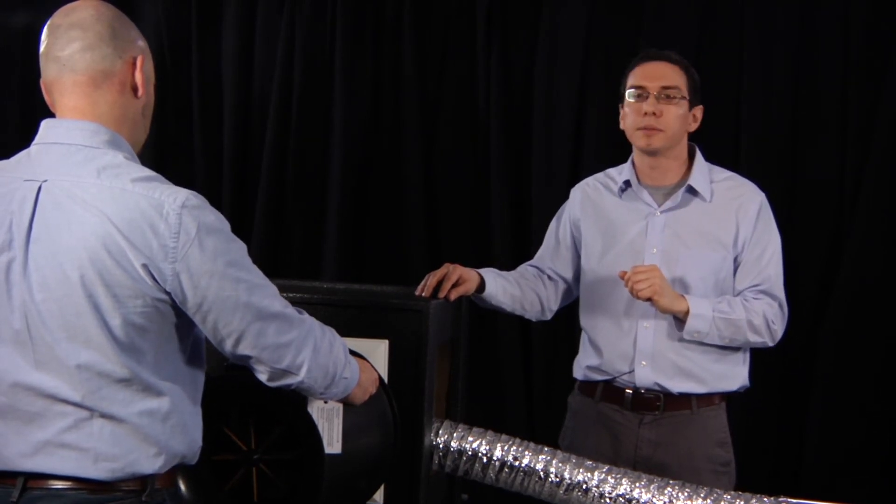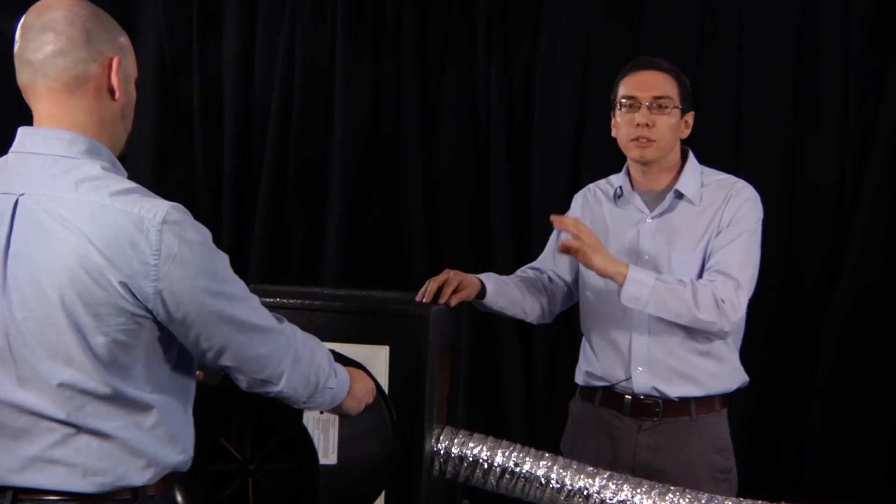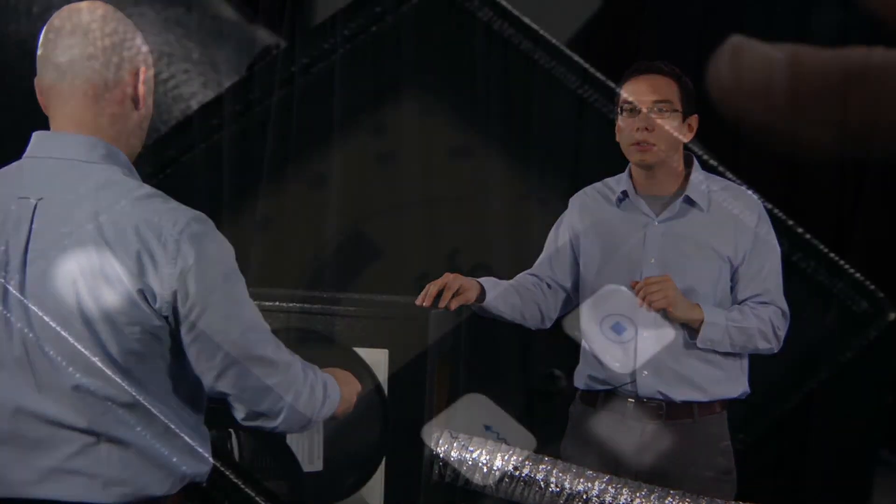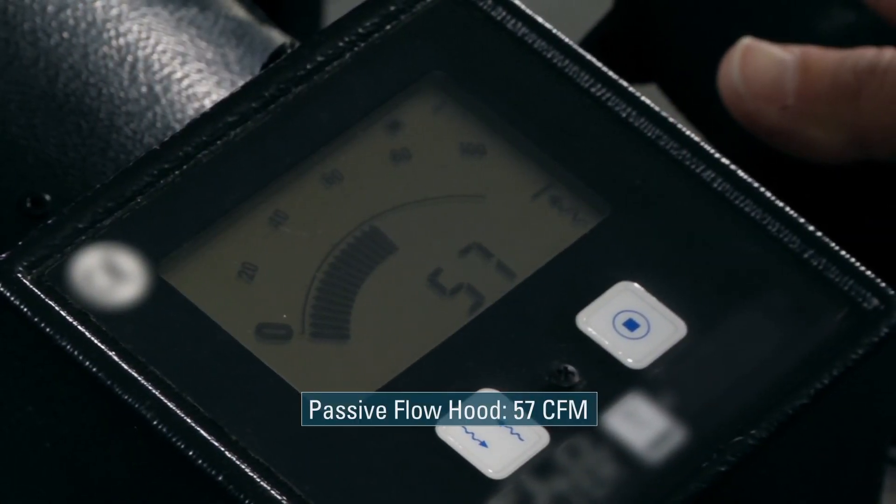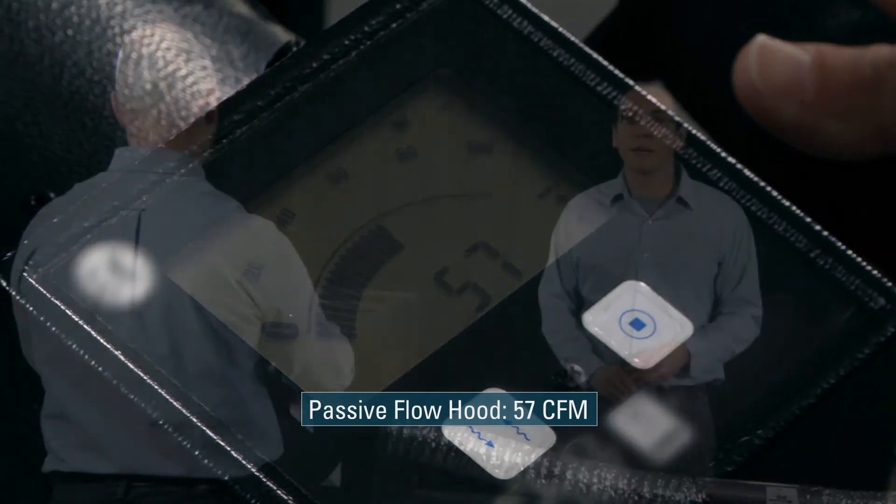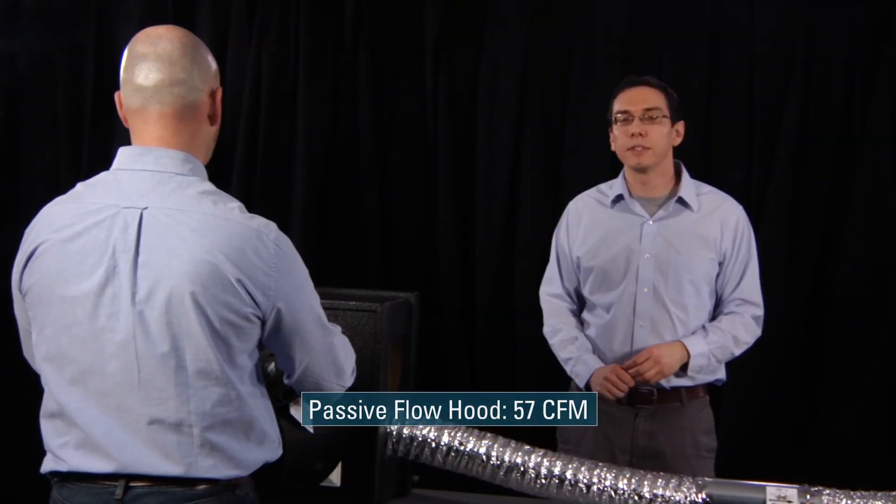First, James measured the pressure difference using the manometer, which was well below the eight pascal limit. That was the case, and so we can now take the average airflow over 10 seconds. Using the passive flow hood, we arrived at an airflow of 57 CFM.